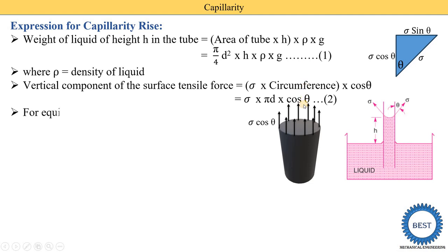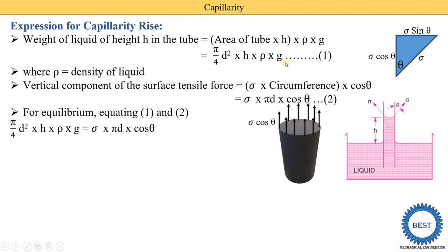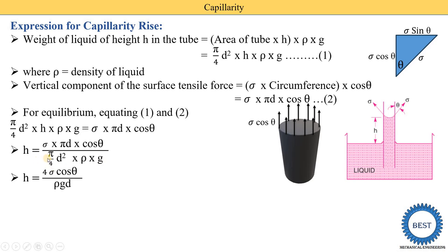Under equilibrium, we equate equation one and equation two: pi by 4 times d squared times h times rho times g equals sigma times pi times d times cos theta. Solving for h: pi cancels, one d cancels, and 4 moves to the upper side. So h equals 4 sigma cos theta divided by rho g d.